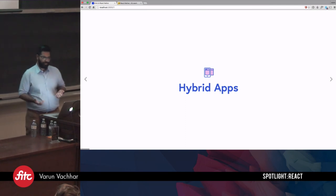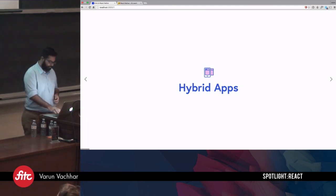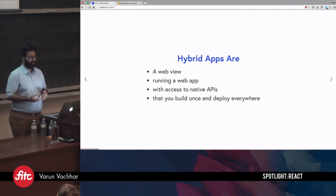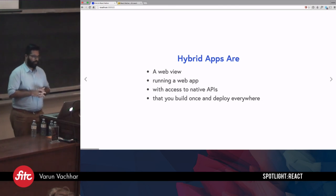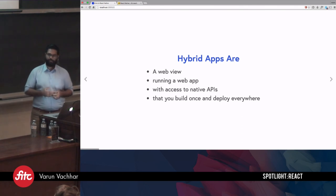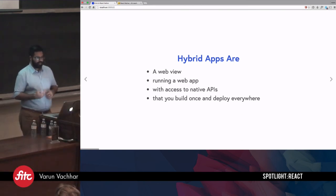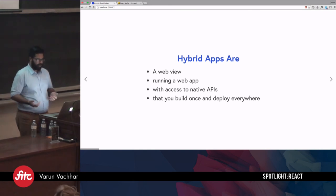I'm a JavaScript developer, so the last few years when it came to building mobile apps, I would actually build them as hybrid applications. Hybrid applications are of a kind where you essentially build out a web application with HTML, CSS, and JavaScript, and then wrap it in a web view using something like Ionic, Cordova, or PhoneGap. That layer also provides you access to native APIs so that you can talk to the actual operating systems like iOS and Android. The idea with hybrid applications is you essentially build your application once, and then you can deploy it anywhere.